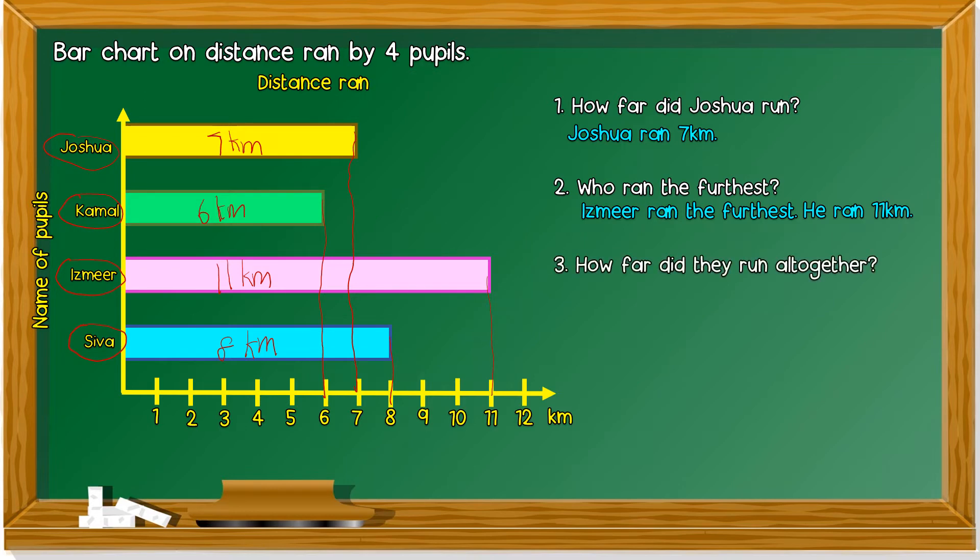Number three. How far did they run all together? All together. What's the meaning of all together? What operation should you use? Is it addition, subtraction, multiplication, or division? All together means you need to add all. Tambah kesemuanya.